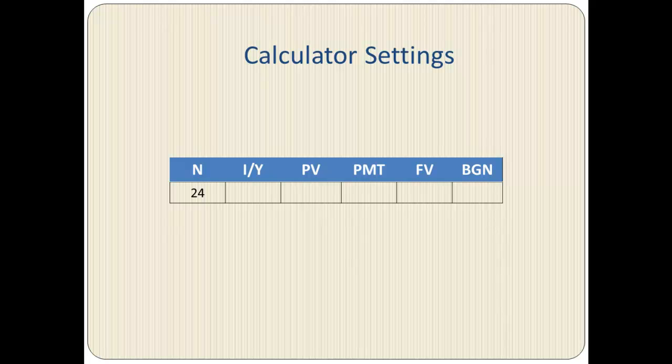So our N equals 24. This represents the 24 semi-annual compounding periods. I/Y for six months is 3.5. Annually, it's 7%. And this is the yield to maturity. So it's 3.5% for six months.